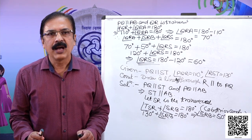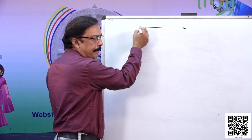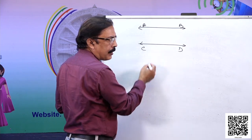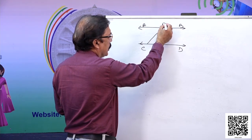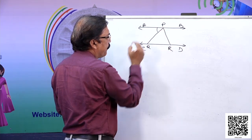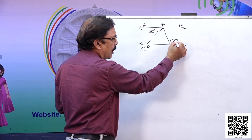Let's look at another question. AB is parallel to CD, angle APQ is equal to 50 degrees, and angle PRD is equal to 127 degrees. Find the values of x and y, where x is angle PQR and y is angle QPR.